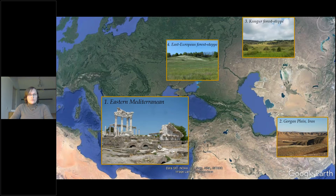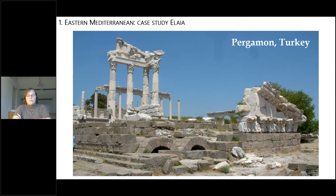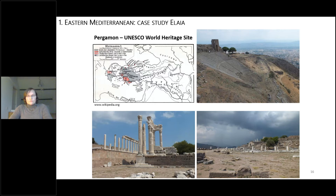Let's go to the first case study, Eastern Mediterranean, with our studies in Elaia and Ainos. Two weeks ago there was a nice presentation about Elaia and surroundings, Pergamon and around. Today I will explain my studies and show the results.